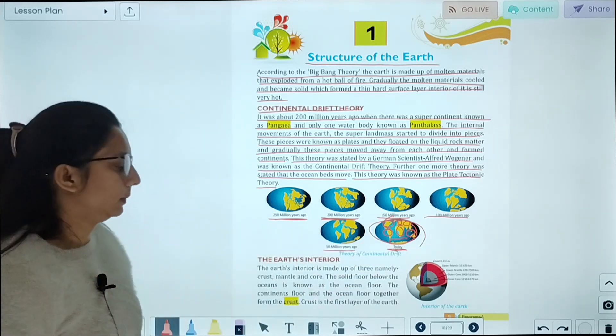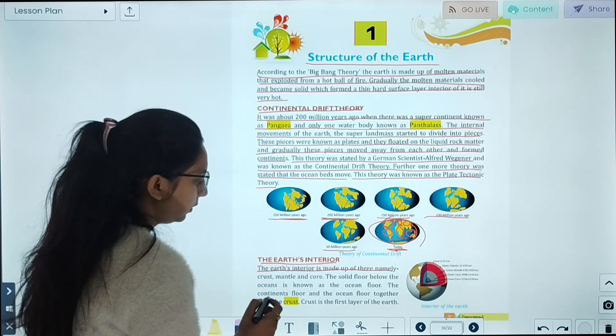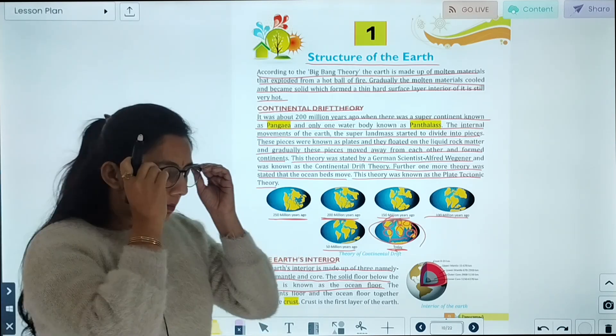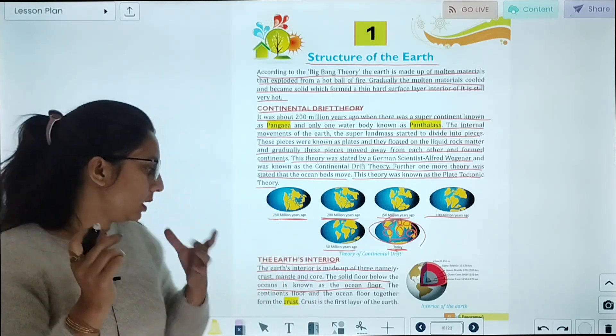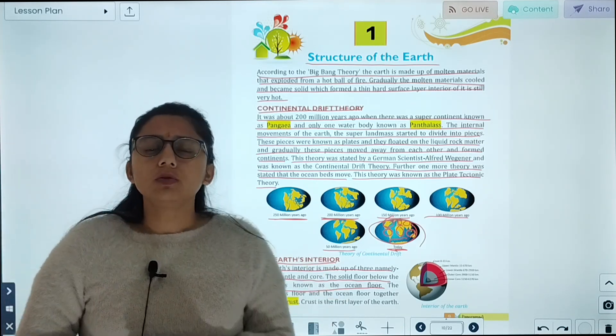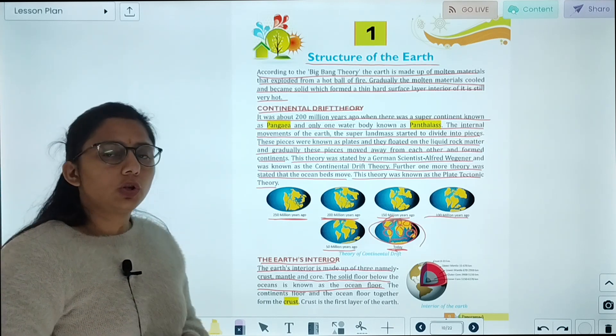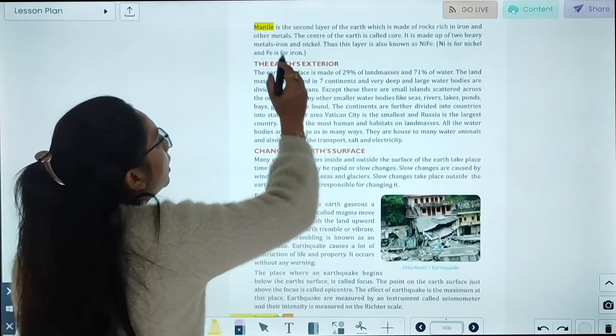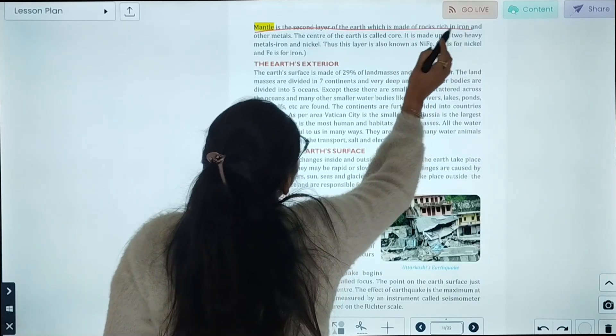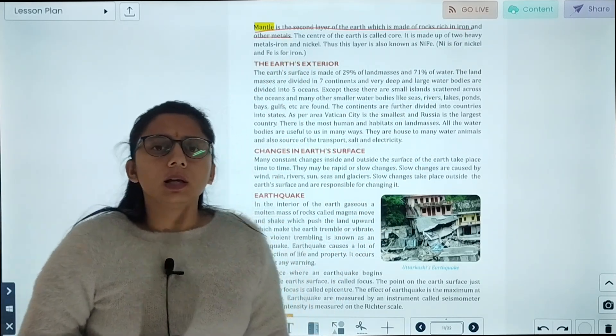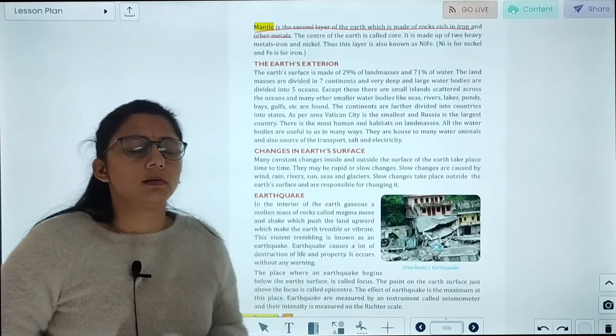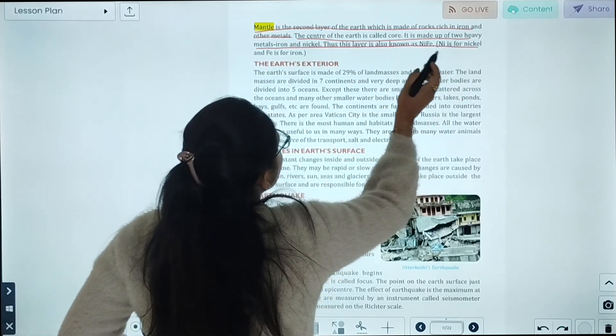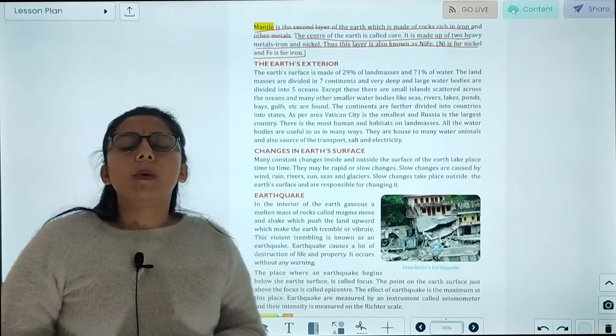The earth's interior is made up of three layers: crust, mantle, and core. The solid floor below the ocean is known as ocean floor. The continent floor and the ocean floor together form the crust. Crust is the first layer of the earth. Mantle is the second layer of the earth, which is made up of rock rich in iron and other metals. Then the center of the earth is called core. It is made up of two heavy metals, iron and nickel.